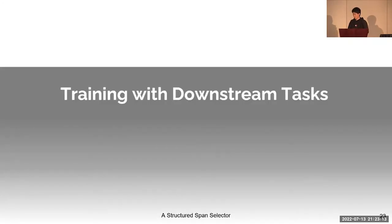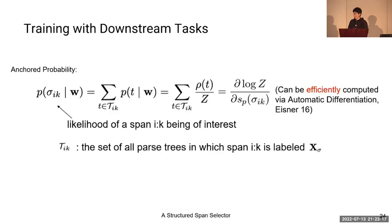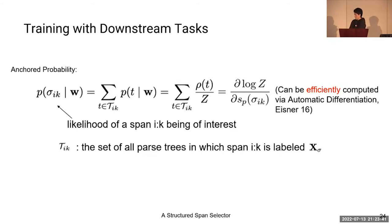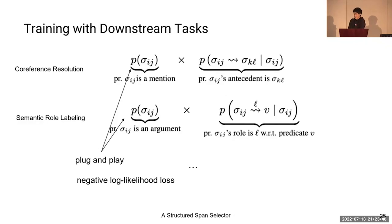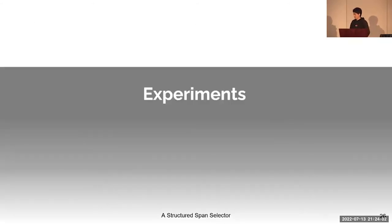We now introduce how to train this model with various downstream tasks. To design a probabilistic model, we need to compute the likelihood of a span being of interest. This likelihood, also known as the anchored probability in parsing, is defined as the sum of probabilities of parses that contain the span of interest, and can be very efficiently computed using Eisner's algorithm. Please refer to our paper for the detailed derivation. This likelihood can be easily combined with the likelihood of the downstream task in a plug-and-play manner, and the model can be trained end-to-end using a negative log-likelihood loss.